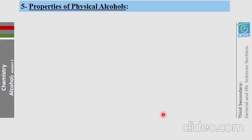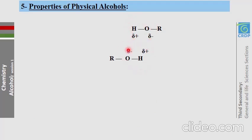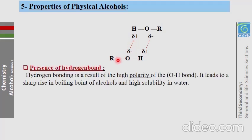Physical properties of alcohols are determined by the OH group. The O-H bond is a polar bond, so in a pure alcohol there is a slight attraction between the slightly positive and negative charges. This attraction is called a hydrogen bond. Hydrogen bonds require more energy to break, giving alcohols a high boiling point. They are also responsible for the high solubility of alcohols in water.